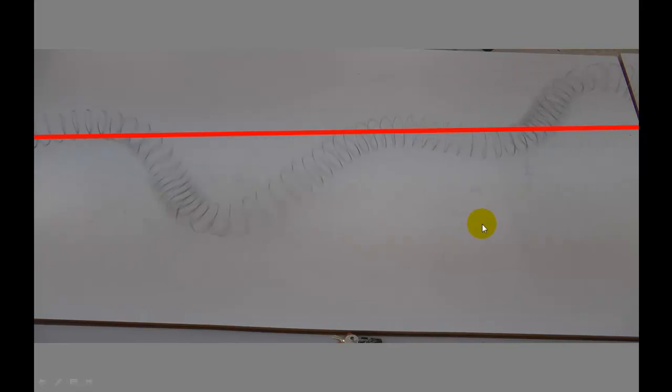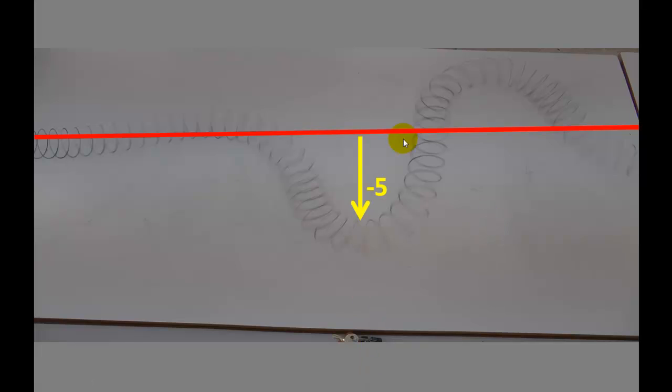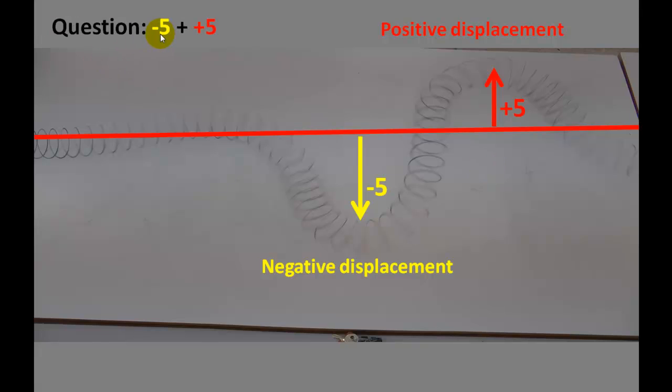As we can see, they come towards each other. And you could at this point say that this is displaced negatively from the equilibrium position by minus 5, or it's minus 5 displacement, and this is a positive displacement. Okay, and so what happens when you add minus 5 to plus 5?